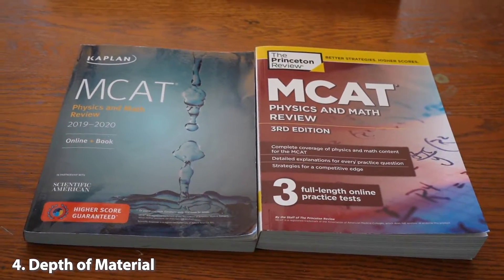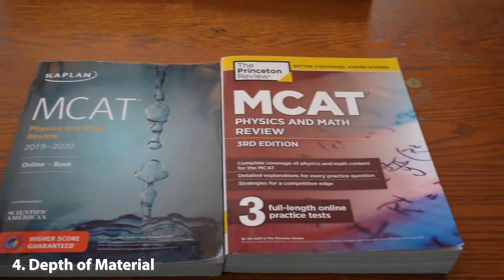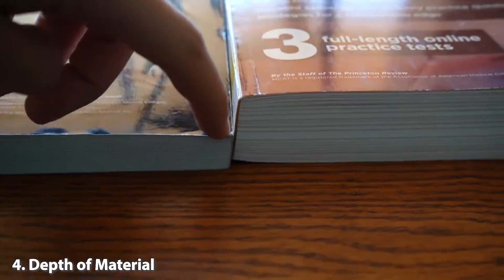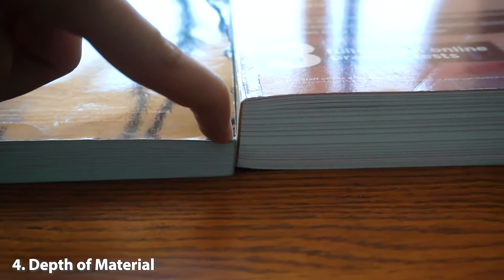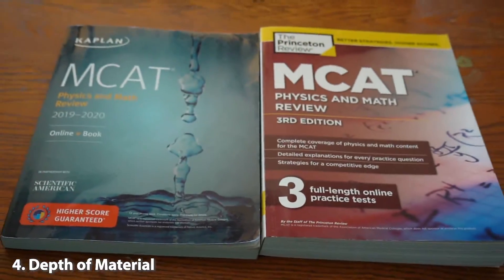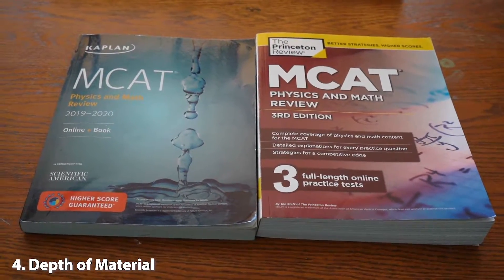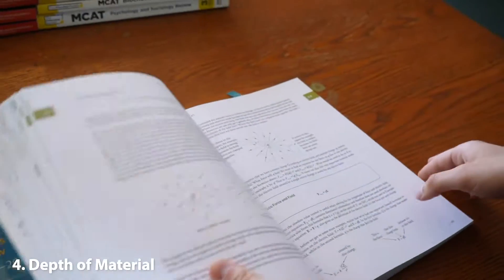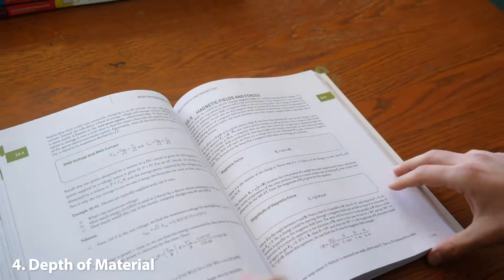Here are the physics books side by side. Kaplan, Princeton. And each book has all the equations you need after each chapter. But the Princeton Review Book has a special place for all the equations.